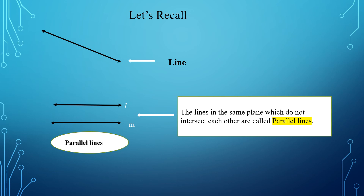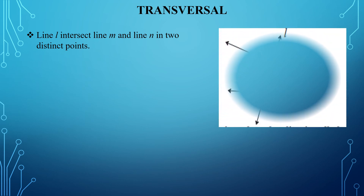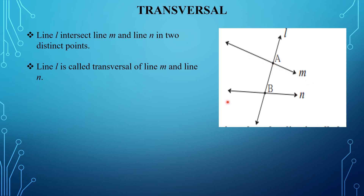Now let us learn what a transversal is. In this figure, you can see there are two lines — line M and line N — and there is another line, line L, which intersects these two lines at two distinct points, that is point A and point B. So this line L is called the transversal line of lines M and N.